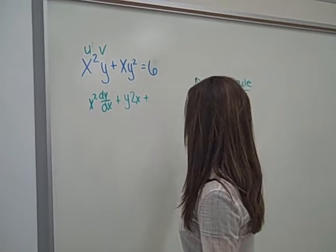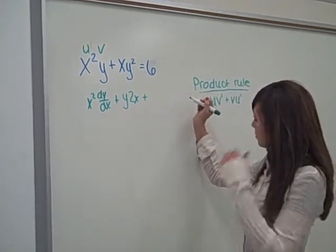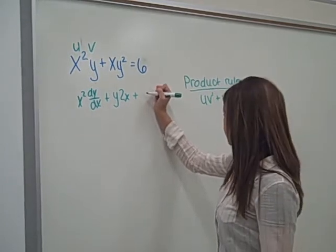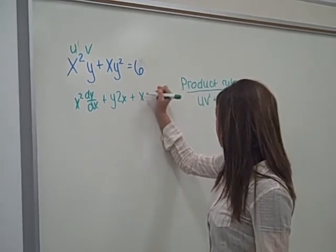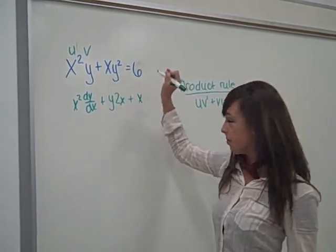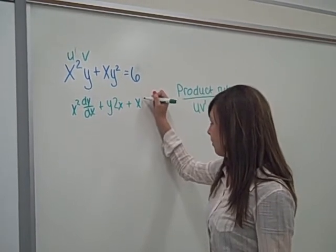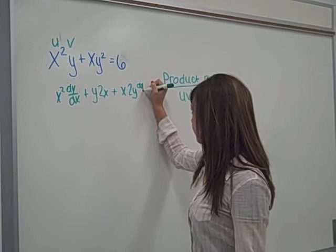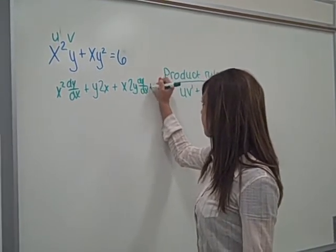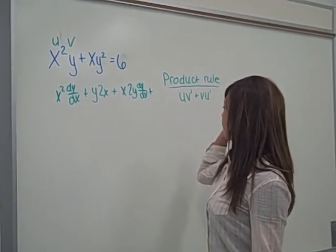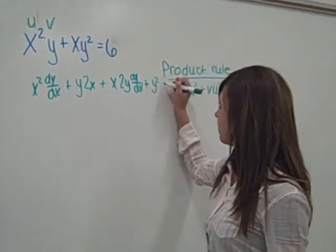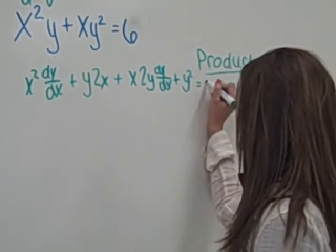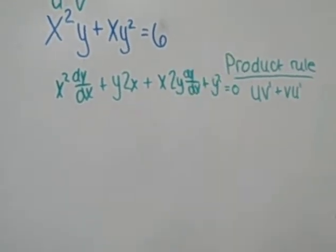And then we have to do it to this one too. So to do that, this would be u and v also. And then we would take u, which is x times the derivative of v, which is y squared. So then we would have 2y dy over dx, plus y squared times the derivative of x, which is just 1. And equals 0 because the derivative of 6 is 0.